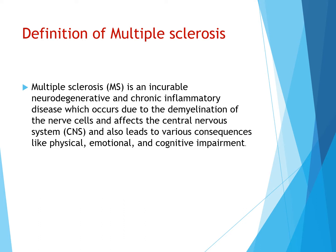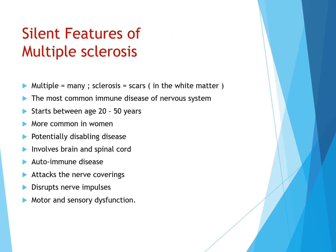Because of this, the nerve cells are affected, leading to consequences which can be physical, emotional, or even cognitive. It is a degeneration and inflammation of the myelin sheath covering the nerves. Multiple means many and sclerosis means scars, so in short it is multiple scarring of the nerve tissue. Multiple sclerosis is considered the most common autoimmune disease of the nervous system.